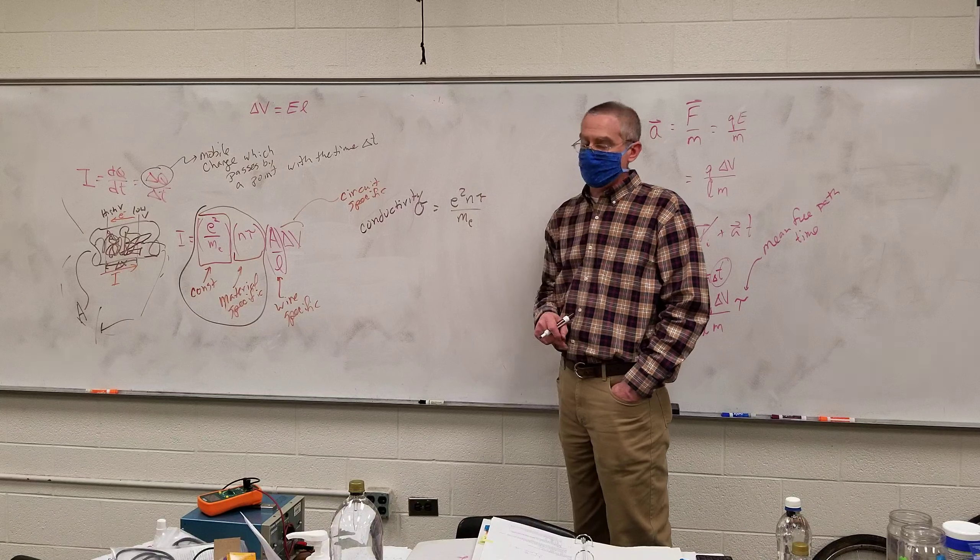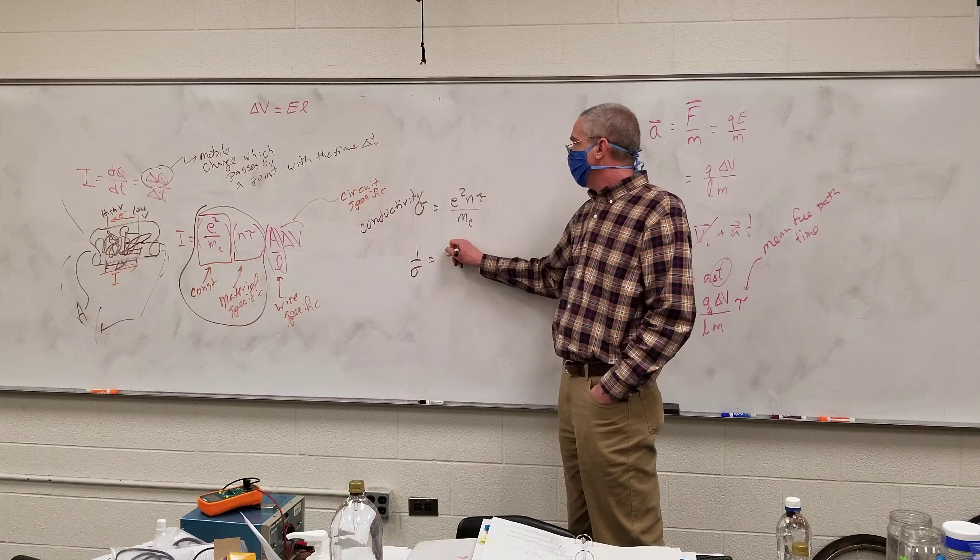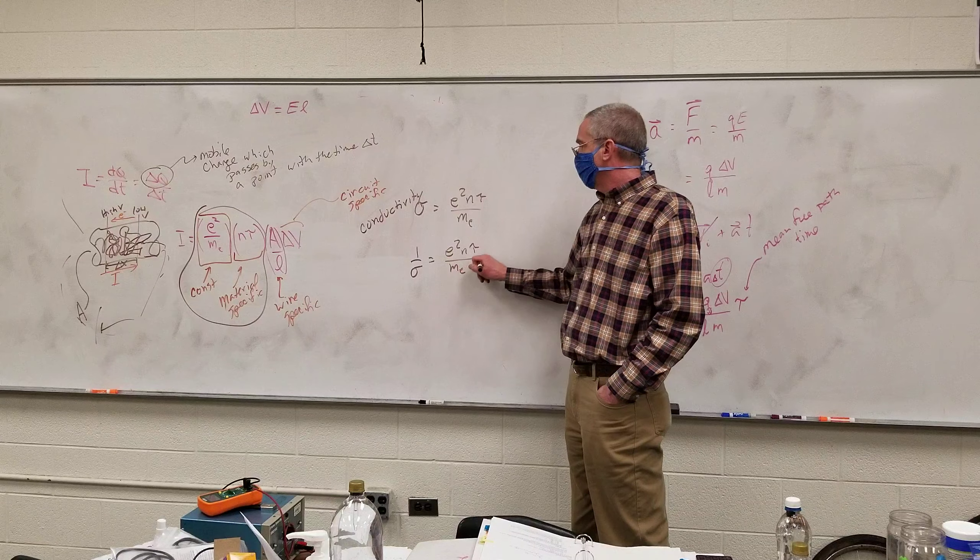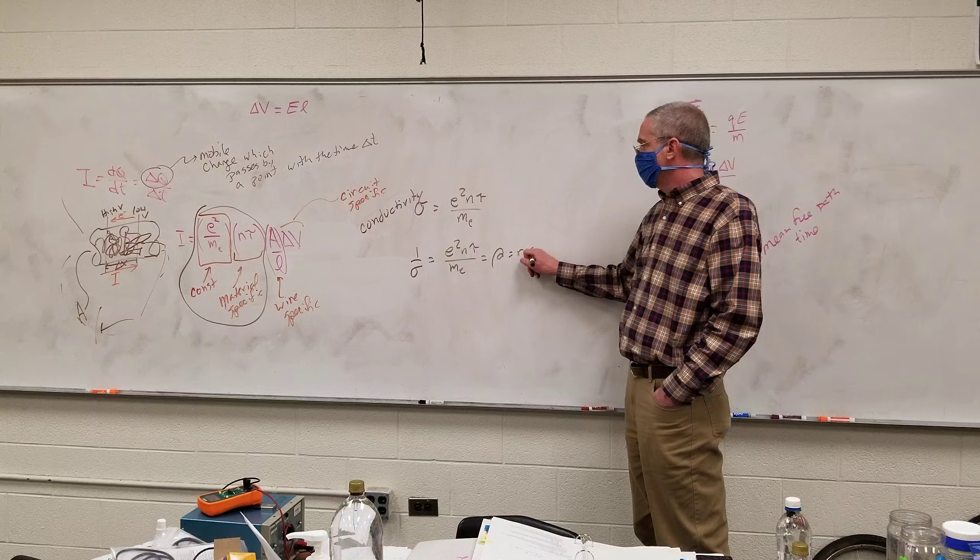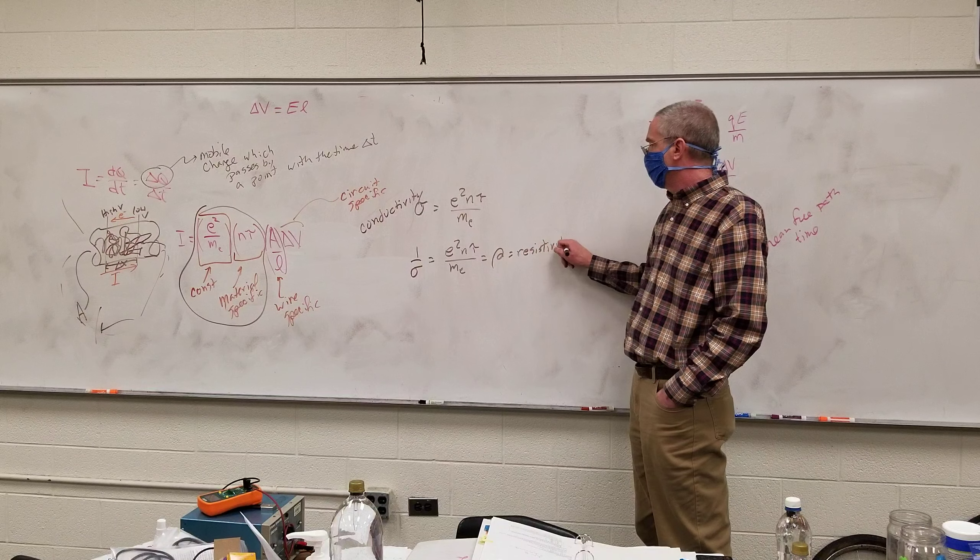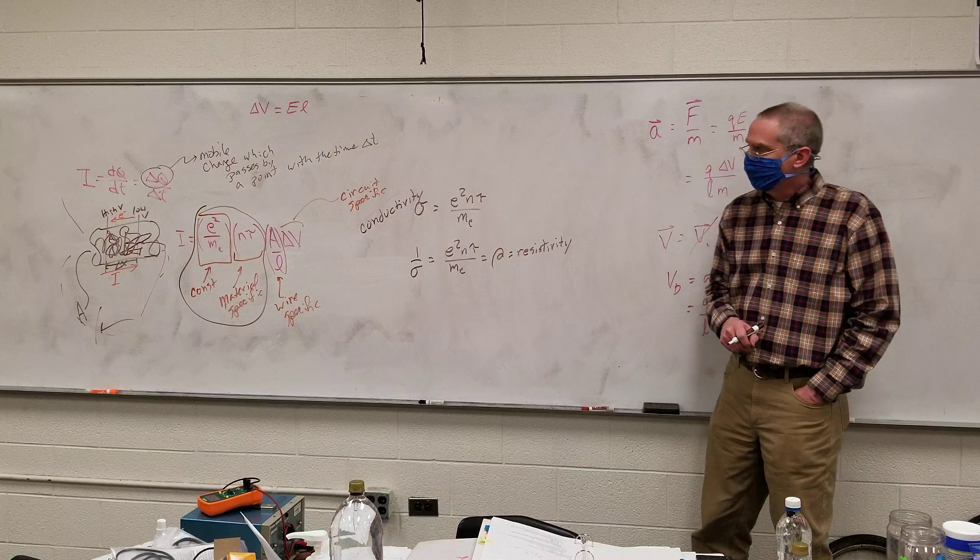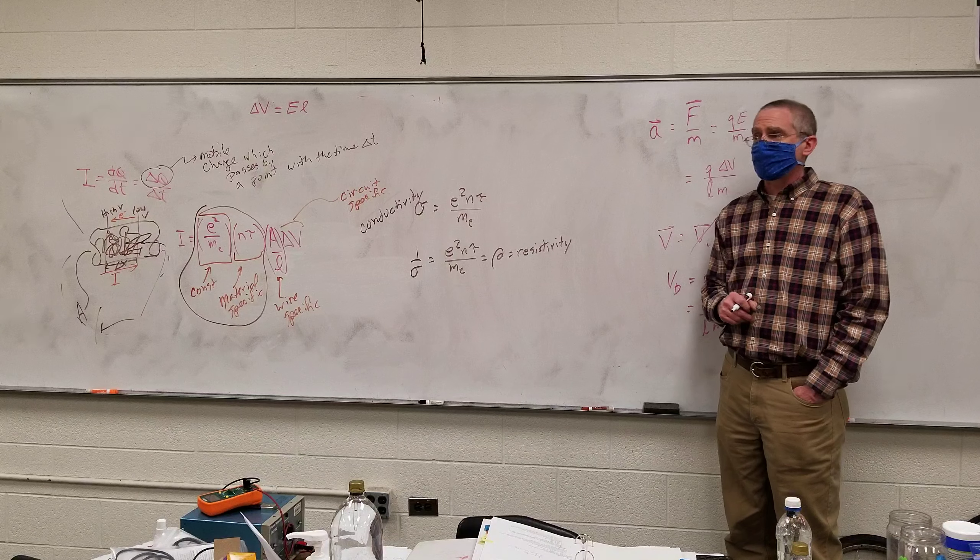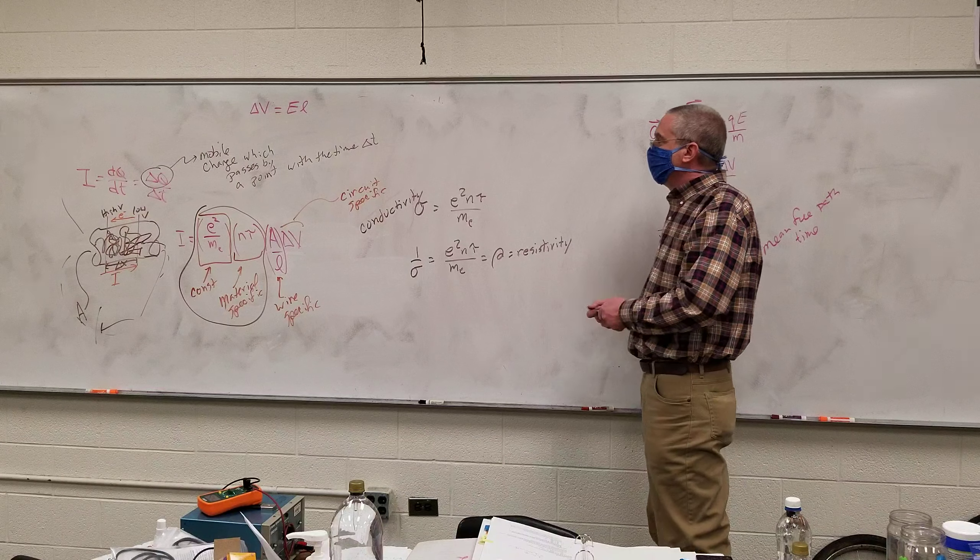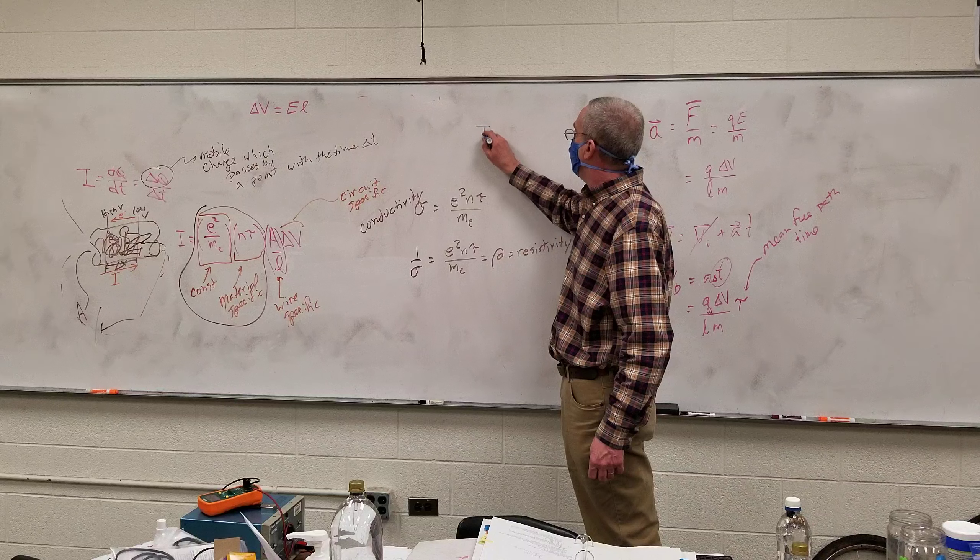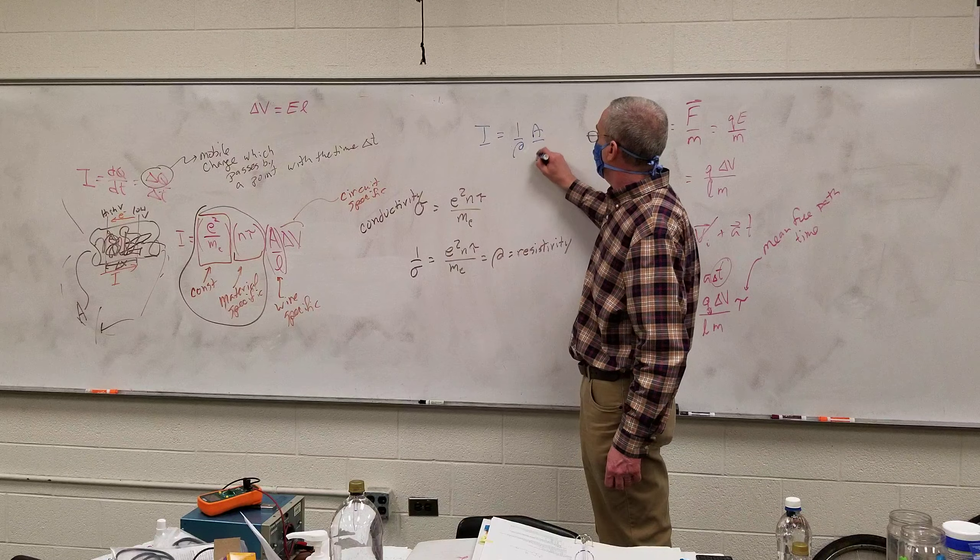They also decided that, you know, we got the letters, let's use them again. So they said, let's take the reciprocal of that, e squared N tau over M sub e, and we'll call that the resistivity. What letter is that? It's a rho. Yeah, sigma and rho are also used for density, so let's not confuse those. So my formula down there is now simplified into I is equal to 1 over rho, A over L delta V.